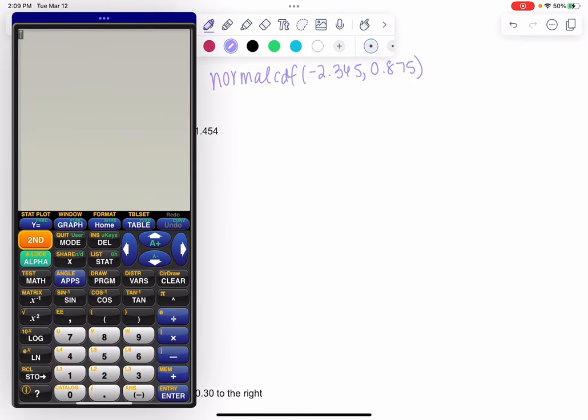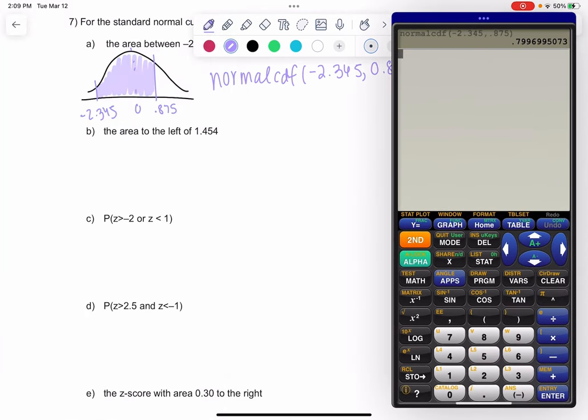So second distribution, we always choose CDF, negative 2.345 up to 0.875. And we get an area of about 0.7997. That makes sense with my drawing. Let's do a few more.